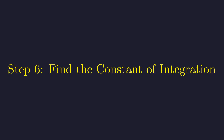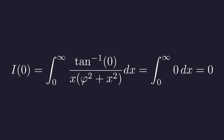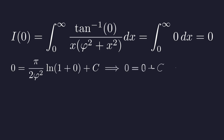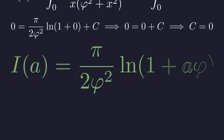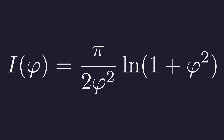To find C, we evaluate I of A at a convenient point. The easiest choice is A equals 0. Looking at our original definition of I of A, if we set A to 0, the arctangent becomes 0, making the entire integral 0. Plugging A equals 0 into our integrated result, since the natural log of 1 is 0, the constant C must also be 0. So this is our general solution for any value of A. We are now at the final step — the original problem asked for I of phi. Substituting A with phi in our general solution, the value of our formidable integral is pi over 2 phi squared times the natural log of 1 plus phi squared.